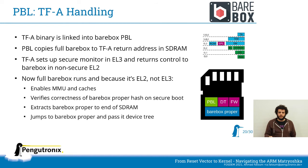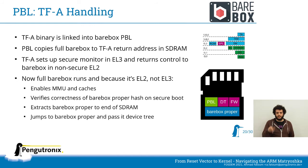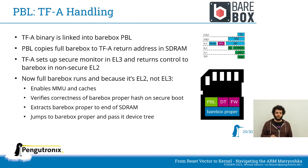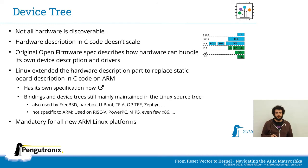Barebox sees it's at EL2, enables MMUs and caches, verifies the barebox image for correctness, extracts barebox proper to the end of RAM, then jumps there and passes a device tree. In the image you see a DT (device tree) and FW (firmware, in this case ARM Trusted Firmware) that were loaded.